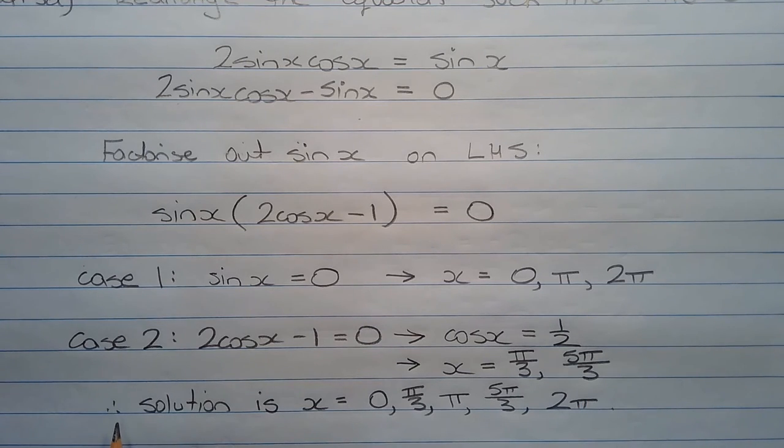Combining all those solutions together, we have the solution is x equals 0, pi over 3, pi, 5 pi over 3, or 2 pi.